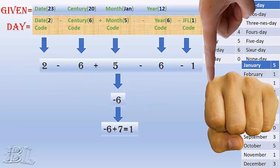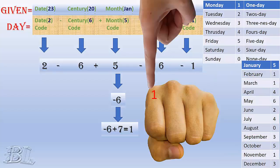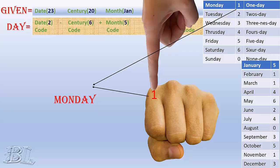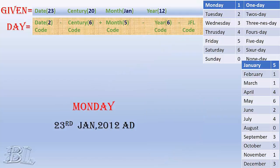Now calculating the day from the codes, we get minus 6, minus 6, and adding 7, we get 1. We look at the fist and find that the index finger is also in the first position of the fist according to our assigned values. So looking at the corresponding day for 1, it is Monday. Calculating many codes adds confusion occasionally, so using this fist method, you need not remember the codes you calculated time and again, because the index finger does that work for you.